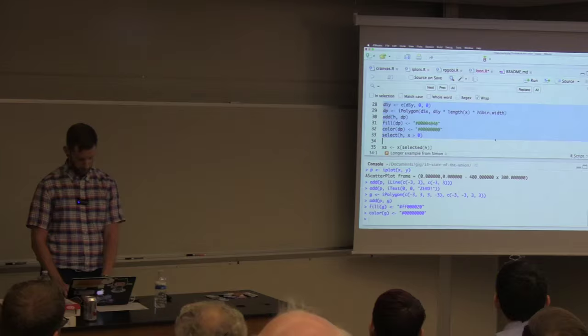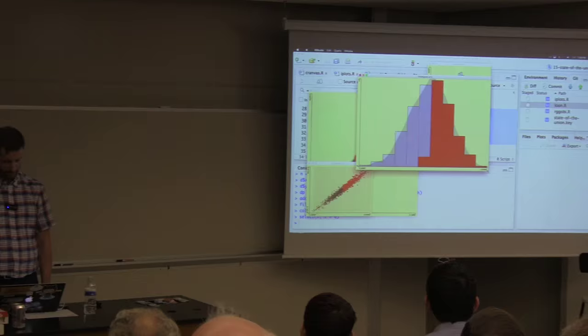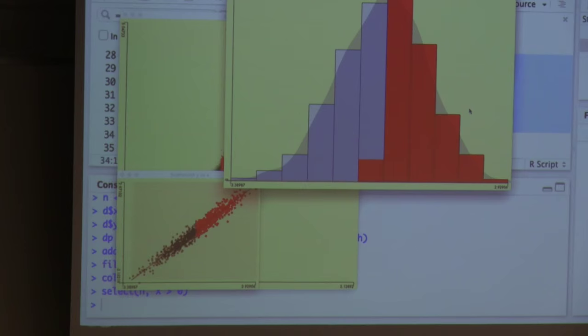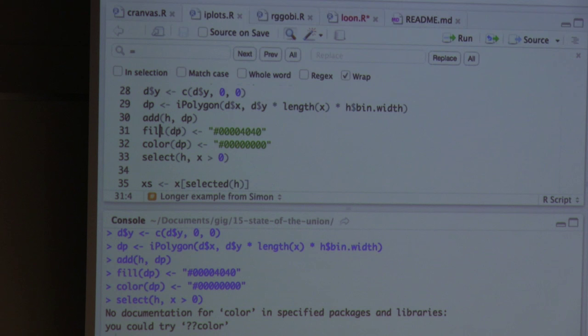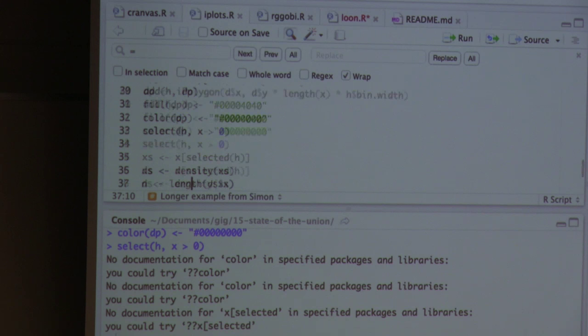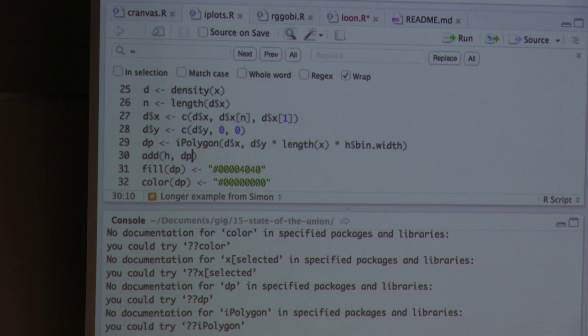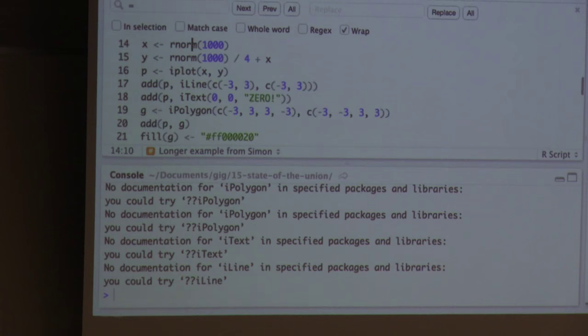So it's pretty fully featured. You can do arbitrary drawings with R code. I have a slightly nicer example. Here I've taken a histogram and overlaid it with a density plot. So you can do—iPlots is quite rich. The problem, however, is that it's not terribly well documented. So as you see, I'm trying to get help on these functions. They simply don't exist. So if you're Simon Urbanek or you closely read the source code, you can do a lot with this package. But unfortunately, it's a little hard to use otherwise.